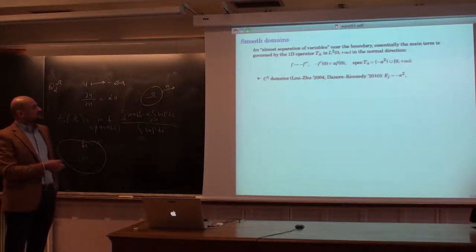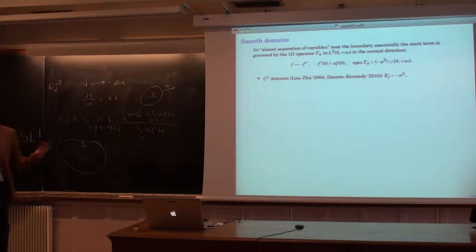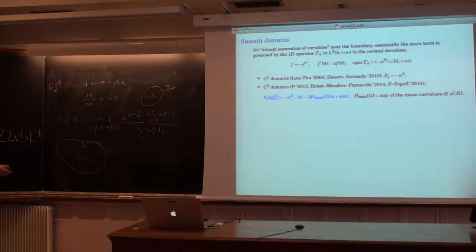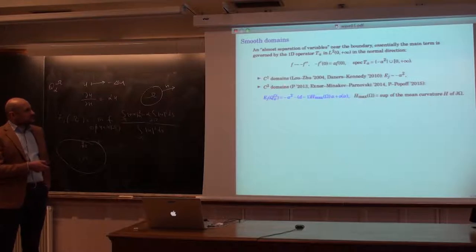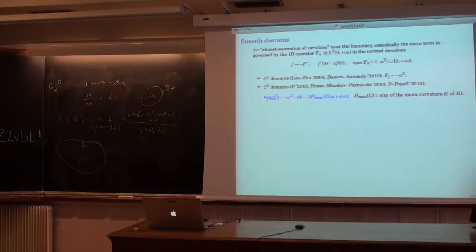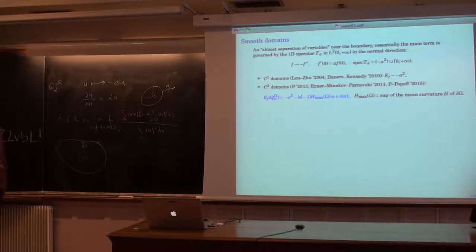If you interpret this as a C¹ domain — in fact one needs a bit more regularity — it was shown in two steps that every fixed eigenvalue behaves as −α² when α becomes large. But if you ask for a bit more regularity, we need it for C³ domains by some technical reasons, though I think C^{1,1} essentially suffices.